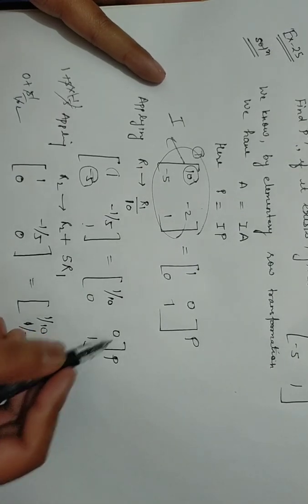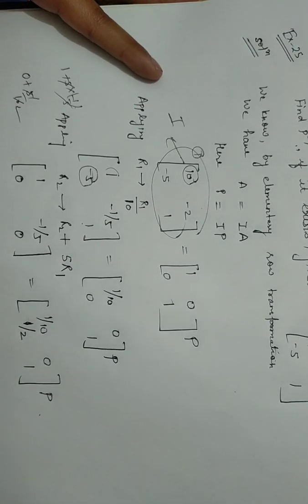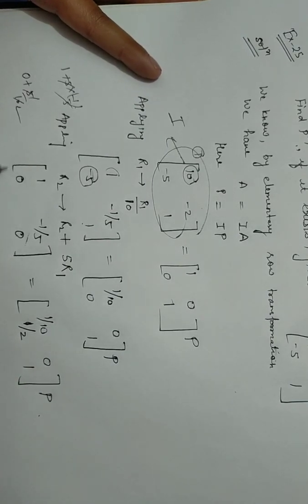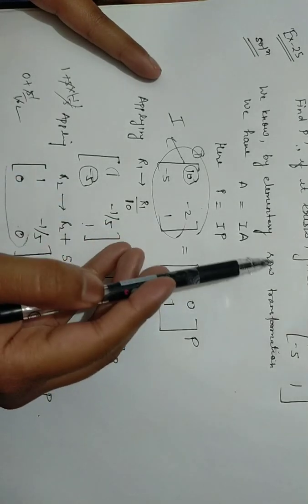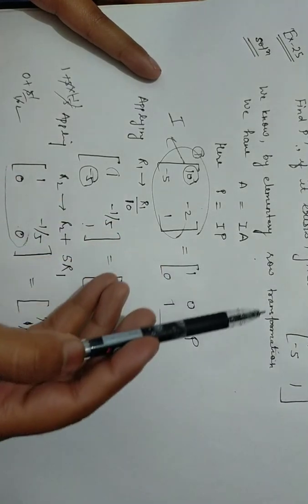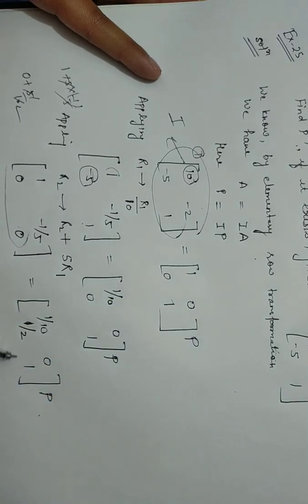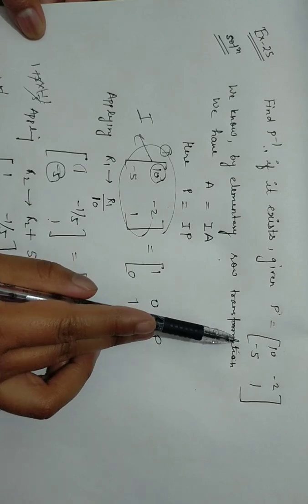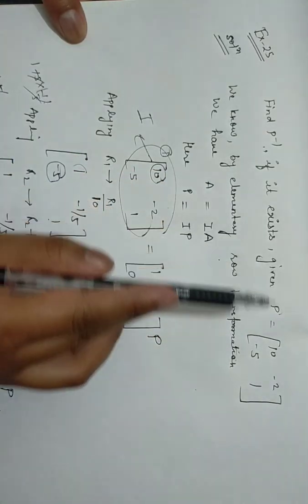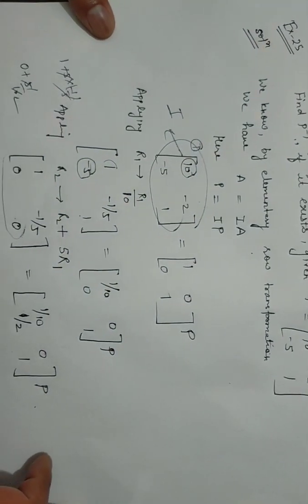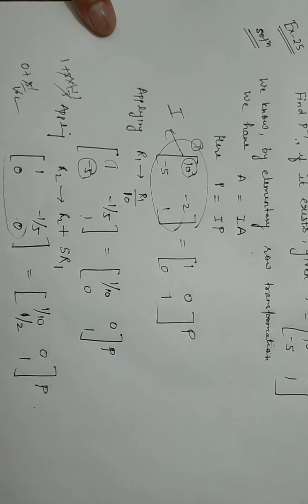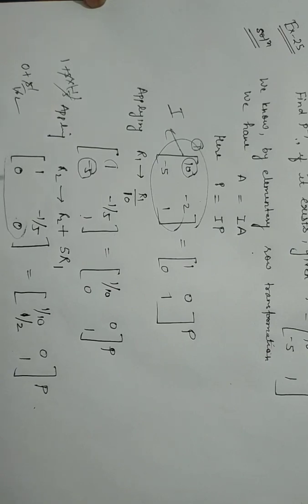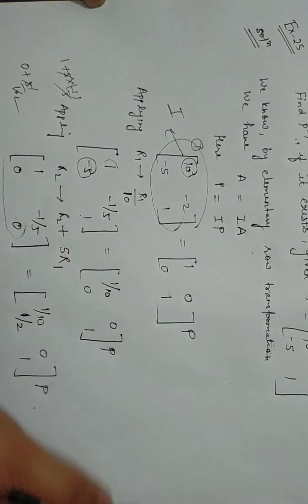Now look here carefully. Whenever any row or column becomes zero in case of row transformation or column transformation, then we cannot find out the inverse of that particular matrix. So this is the rule to find out whether inverse exists or not. If inverse exists, then you will never get any row or column with all zero elements. So that means because of R2, R2 is zero, so here inverse doesn't exist.